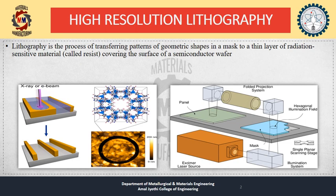The lithography technique involves transfer of some pre-designed geometrical pattern, which is called a mask, on a semiconductor such as silicon, or directly patterning — often known as writing — using suitable radiation. This pre-designed geometrical pattern is called a mask. The mask is usually prepared by creating radiation-opaque and transparent regions on glass or some other material.